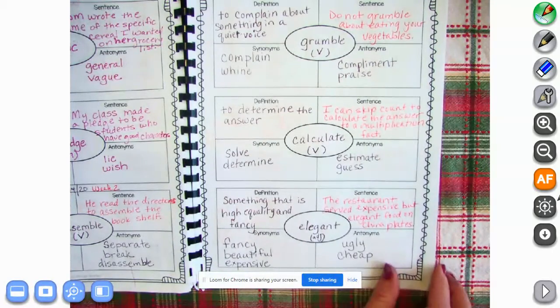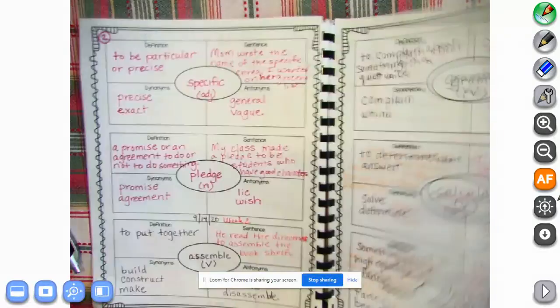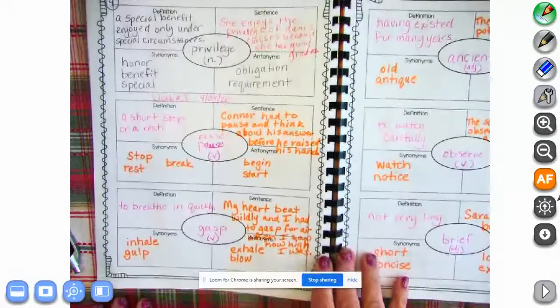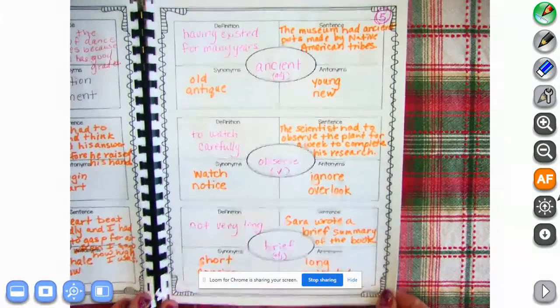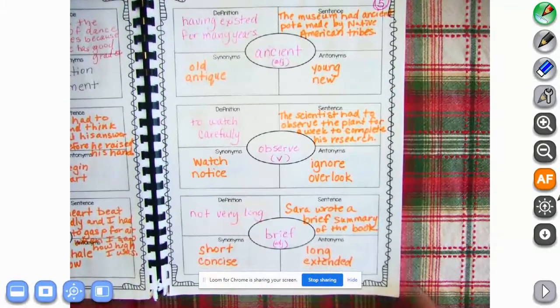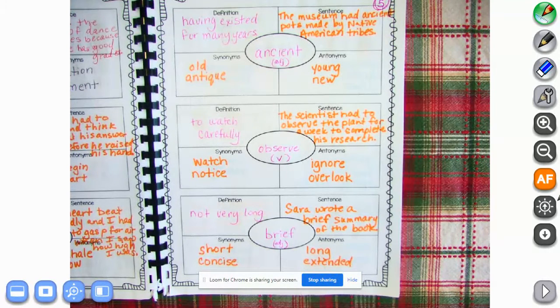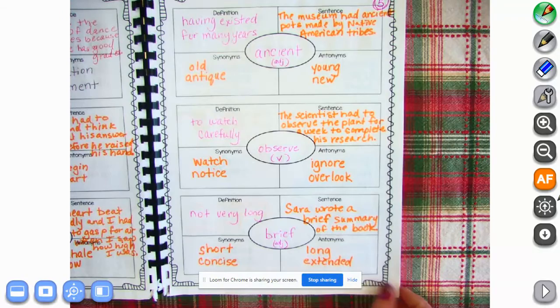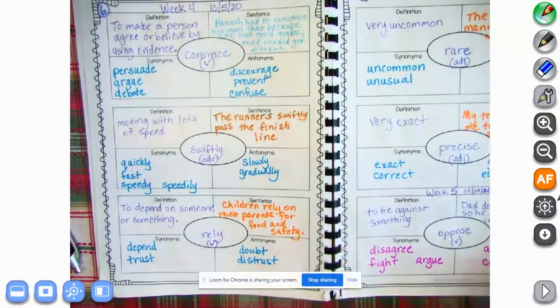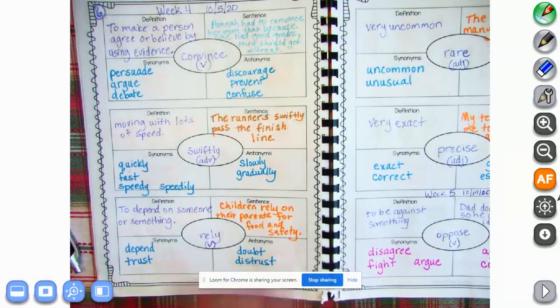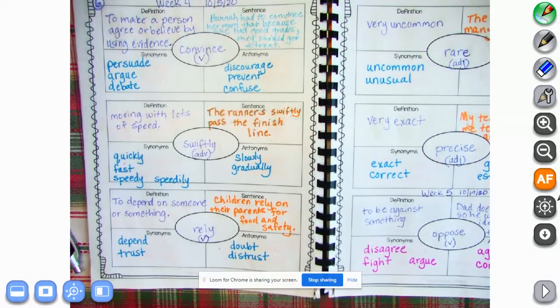On page four we have privilege, pause, and gasp. If you're missing anything there, go ahead and press pause right now. On page five we have ancient, observe, and brief. Make sure you have everything filled in there. Go ahead and press pause. You just need to fill in whatever is missing if you have anything missing. Remember, try not to skip pages. We don't want to be jumping back and forth. Go each one in order. Page six we have convince, swiftly, and rely.